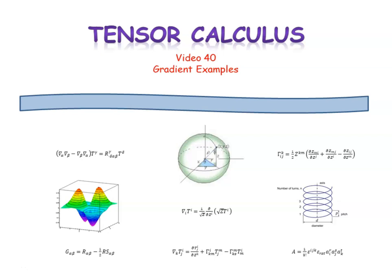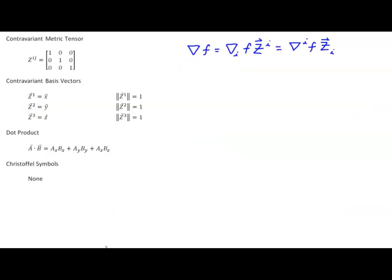In video 40 of tensor calculus, we're going to follow up our previous video by illustrating what the gradient looks like in each of our sample coordinate systems. We'll start with Cartesian coordinates. I've written the expression for the gradient here at the top of the screen, and we can use either of these two forms. In Cartesian coordinates, we should get the same result. The covariant derivative of a scalar function is nothing but the partial derivative, so this is just the partial of f with respect to z_i times our z^i contravariant basis vector.